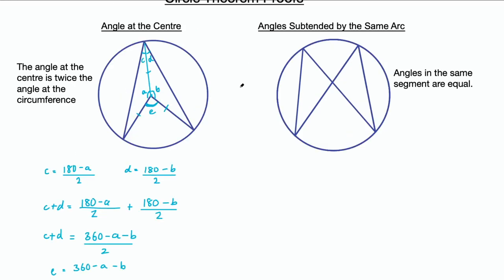The next theorem is called angles subtended by the same arc. It states that angles in the same segment are equal, or equivalently, angles subtended by the same arc are equal. 'Subtended' means the lines leave and join up to the ends of that arc. So if you have an angle subtended by an arc and another angle subtended by the same arc, they're going to be equal.